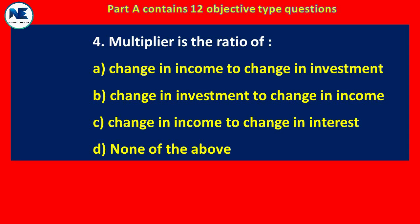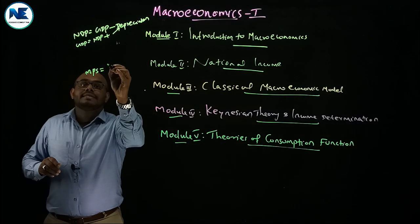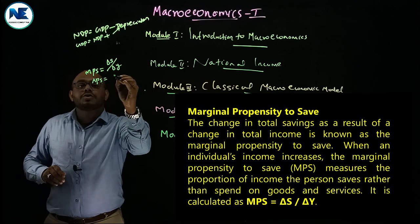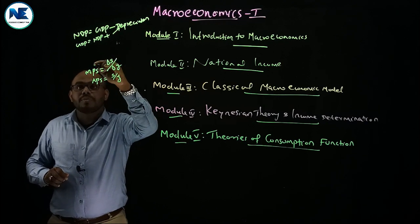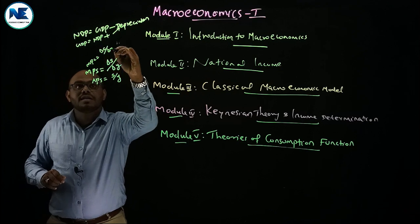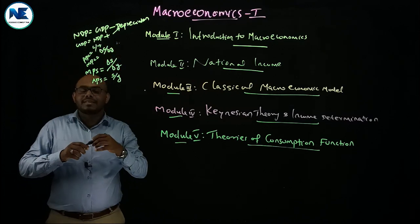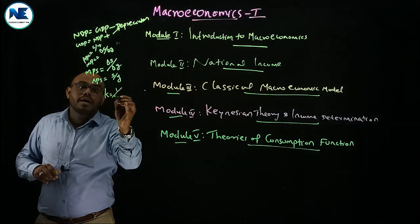Fourth question — the multiplier is the ratio of change in income to change in investment. Related concepts: marginal propensity to save (MPS) equals change in saving to change in income; average propensity to save equals ratio of saving to income; MPC (marginal propensity to consume) equals change in consumption to change in income; average propensity to consume equals ratio of consumption to income. Multiplier K equals 1 divided by (1 minus MPC).